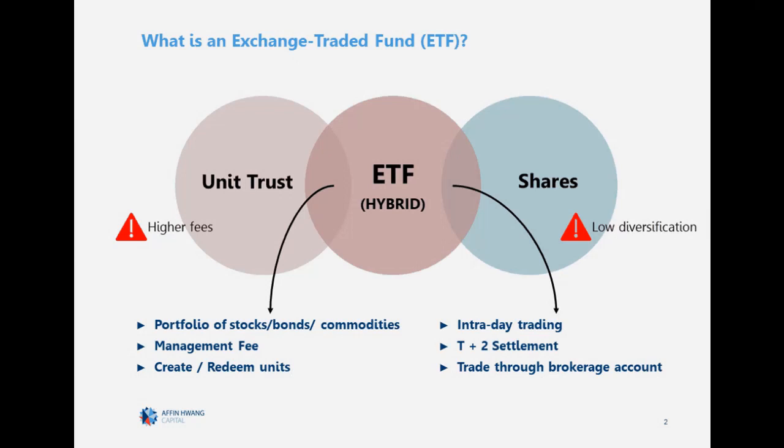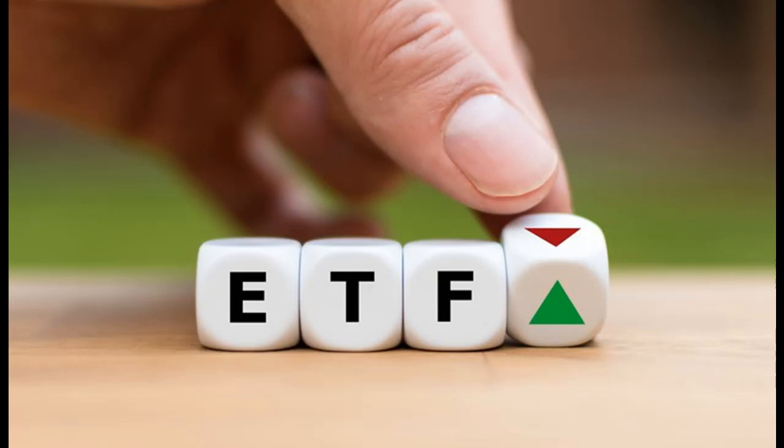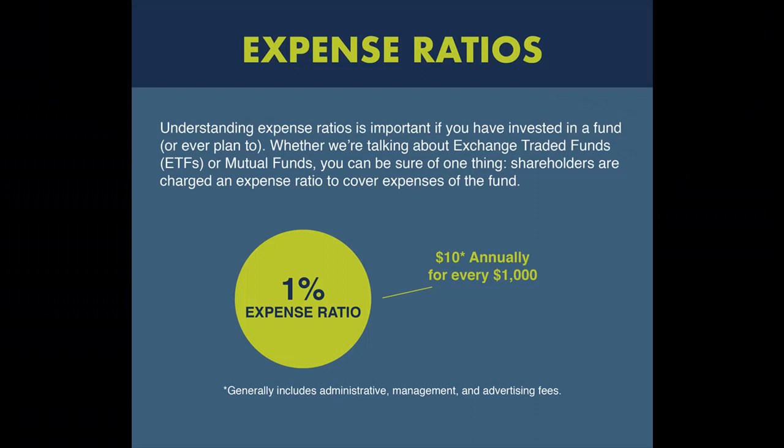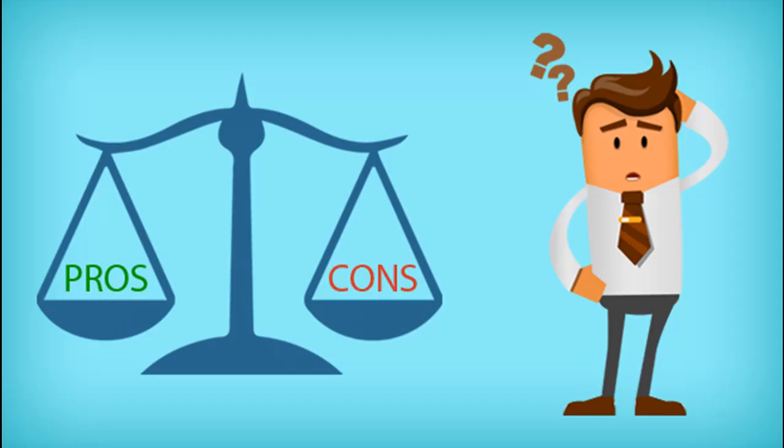ETFs can contain all types of investments including stocks, commodities, and bonds. Some offer US-only holdings while others are international. ETFs provide lower average costs since it would be expensive for investors to buy all the stocks held in an ETF portfolio individually — investors only need to execute one transaction to buy and one to sell. An ETF's expense ratio is the cost to operate and manage the fund. ETFs typically have low expenses since they track an index, making a passively managed fund less time-intensive.